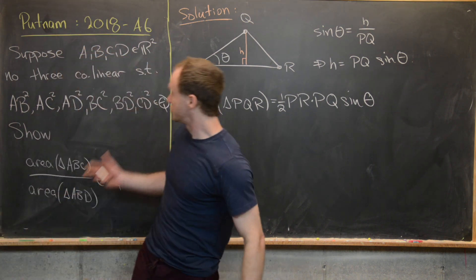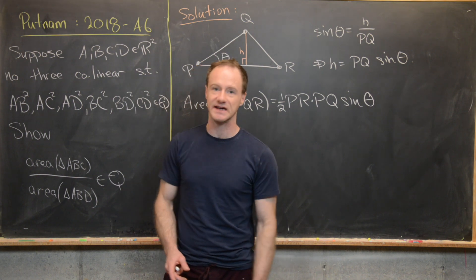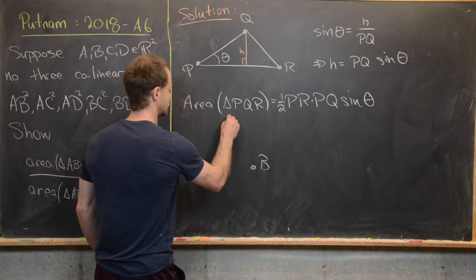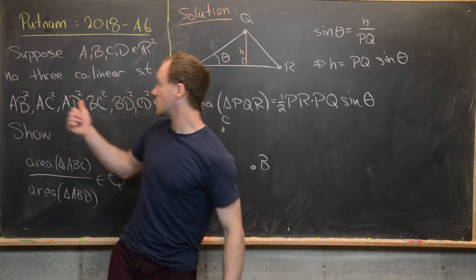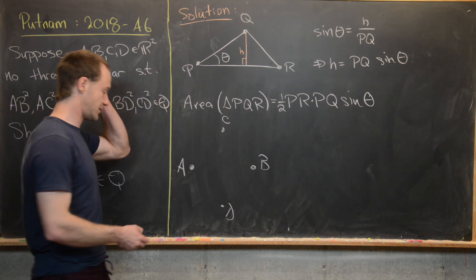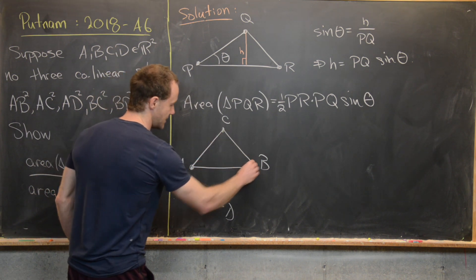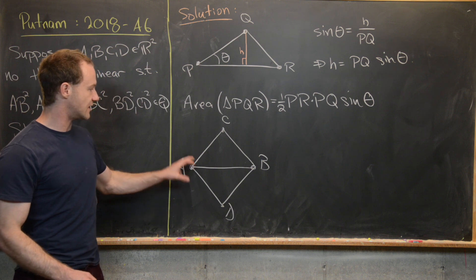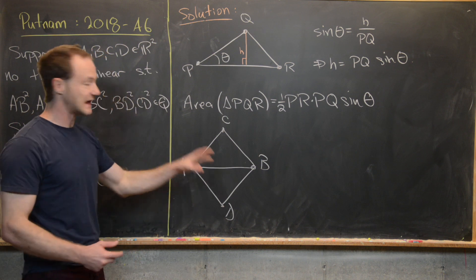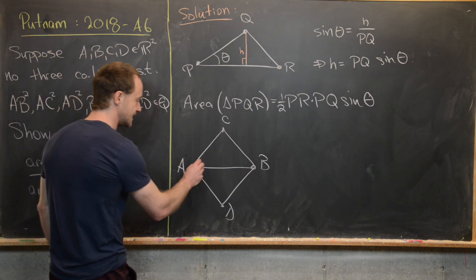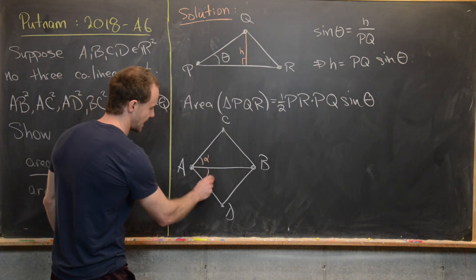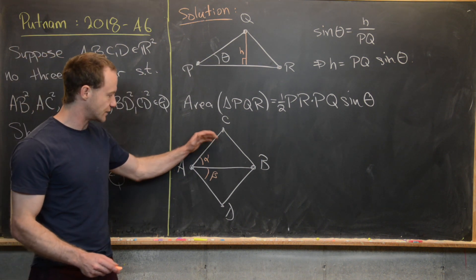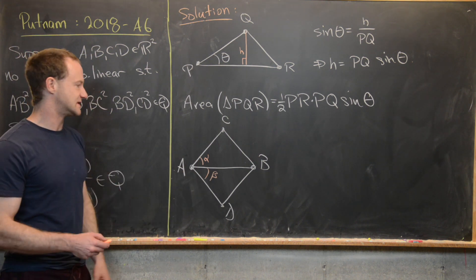Now I'll draw a picture of our situation. Put point A here, point B here, C here, and D here — you can place them anywhere as long as no three are collinear. We have triangle ABC and triangle ABD. The helpful angles are alpha, the angle at A in triangle ABC, and beta, the angle at A in triangle ABD. Importantly, alpha and beta are adjacent, so we can also consider a triangle with angle alpha plus beta.